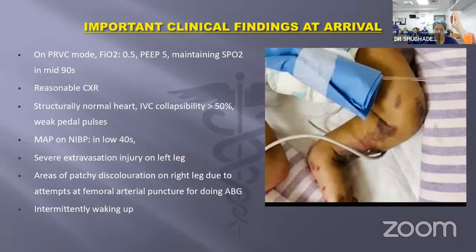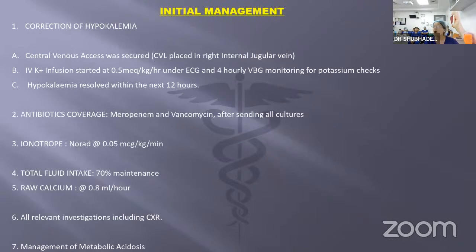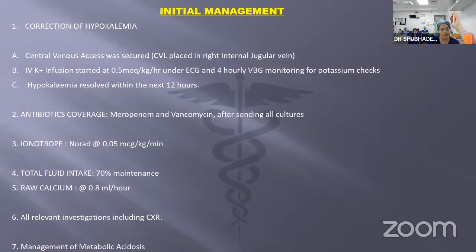She was intermittently waking up with acceptable sensorium. Initial management: we gained central venous access in the right internal jugular vein and started potassium infusion at 0.5 mEq per kg per hour under ECG and bedside monitoring. The hypokalemia resolved over the next 12 hours. Good antibiotic coverage was started after sending cultures. NORAD support at 0.05 mcg per kg per minute and total fluid intake around 70% with calcium were also started.